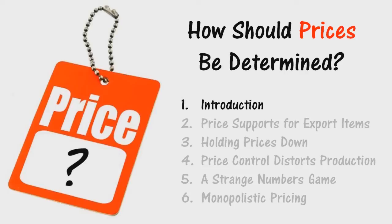Let us begin on the elementary level and say that prices are determined by supply and demand. If the relative demand for a product increases, consumers will be willing to pay more for it. Their competitive bids will both oblige them individually to pay more for it and enable producers to get more for it, raising the profit margins of the producers of that product.